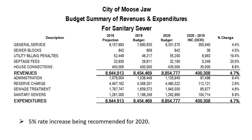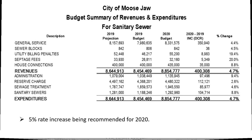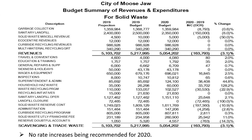Our next utility is sanitary sewer — about an $8.9 million utility. It's a different story in that its costs are much more stable — about $5 million — and we're able to contribute that to the capital needs of the utility. This utility is actually self-sustaining in that the rates we're generating are able to fund the capital needs. For 2020, we're requesting Council to consider a 5% rate increase.